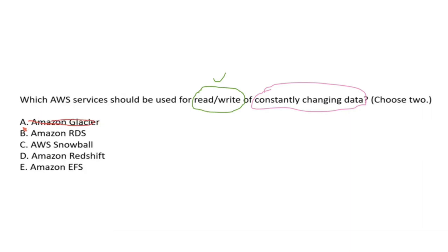Amazon RDS is used for read and write — it's an OLTP transaction service (Relational Database Service) dealing with SQL and constantly changing data, so this can be one of our answers. Amazon Snowball is related to migration of large amounts of data from one premise to another. It cannot be used for constantly changing data, so it's eliminated.